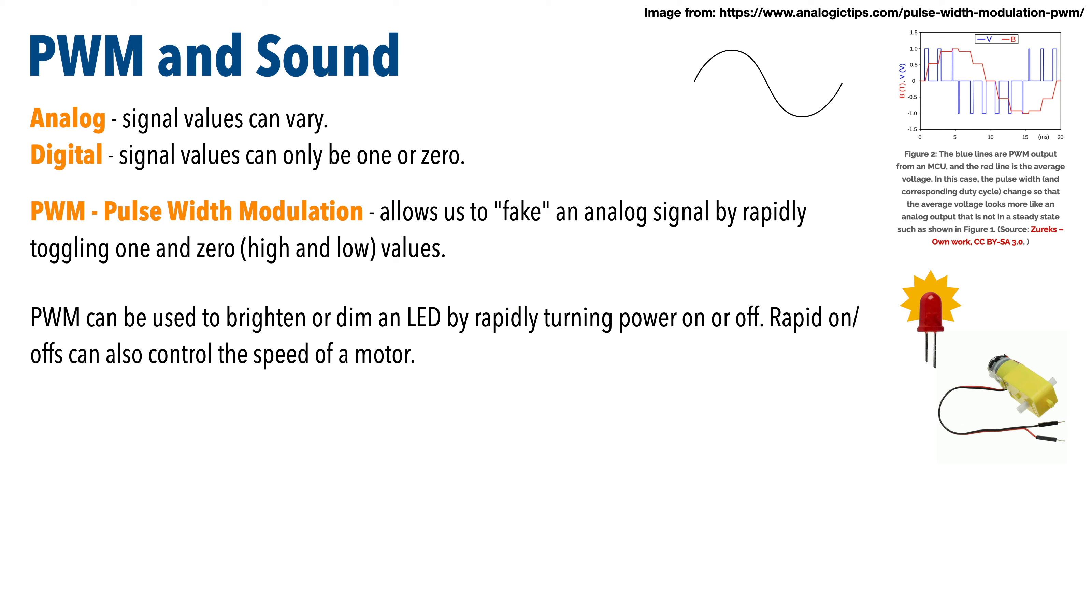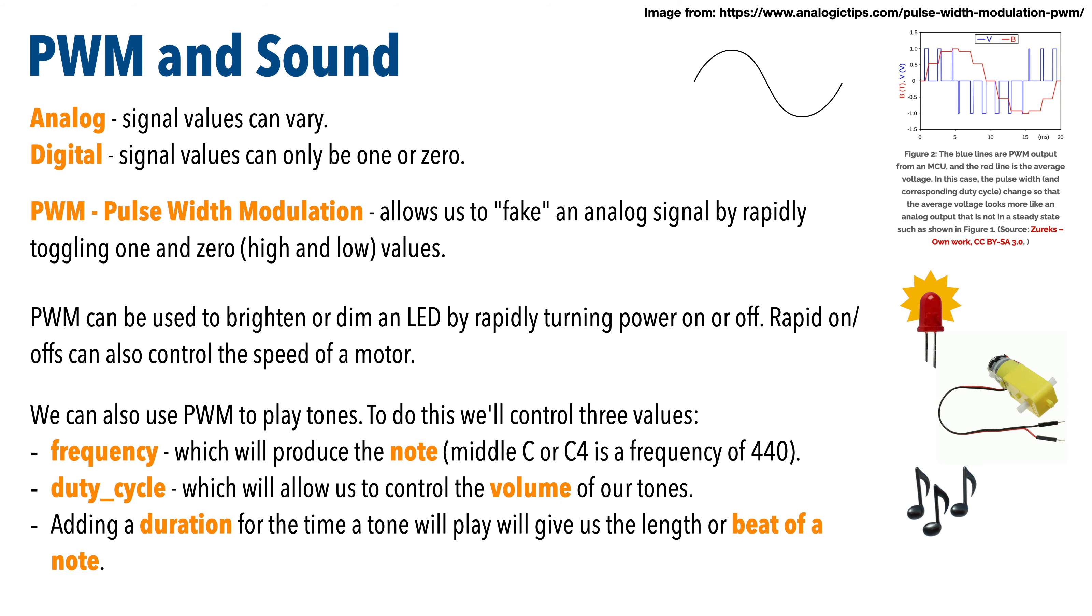PWM can be used to brighten or dim an LED by rapidly turning power on or off. Rapid on and offs can also control the speed of a motor, and we can use PWM to play tones. To do this, we're going to control three values. Frequency - that's the number of fluctuations we'll have in a period. Frequency will produce the notes, so middle C or C4 has a frequency of 440 hertz. We'll also use duty cycle to control the volume of our tones, and we'll also add a duration. This will control the time the tone plays, and this will give us the length or beat of a note.